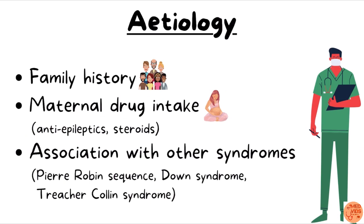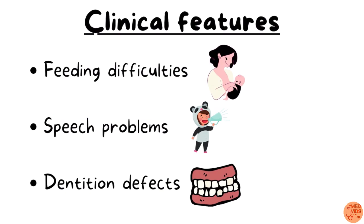Regarding etiology, a positive family history of cleft lip or cleft palate increases the risk. Drug intake by the mother during pregnancy — such as anti-epileptics like phenytoin or steroids — slightly increases the risk. Cleft lip and palate are also associated with syndromes like Pierre Robin syndrome, Down syndrome, and Treacher Collins syndrome. Clinical features include feeding difficulties, speech problems, and dentition defects such as supernumerary teeth, delayed eruption, or dental malocclusion. These features are more pronounced when cleft palate co-exists.